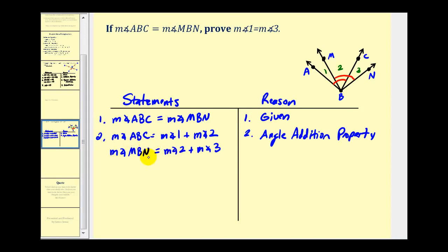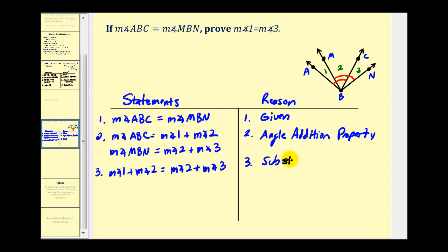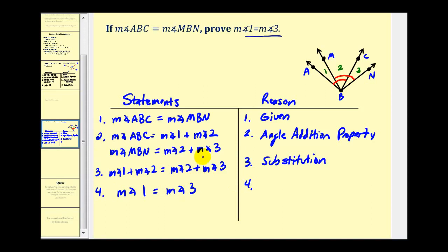Using substitution, the measure of angle one plus the measure of angle two equals the measure of angle two plus the measure of angle three — by the substitution property. Now if we subtract the measure of angle two from both sides, we get the measure of angle one equals the measure of angle three, which is what we were trying to prove. The justification is the subtraction property of equality.